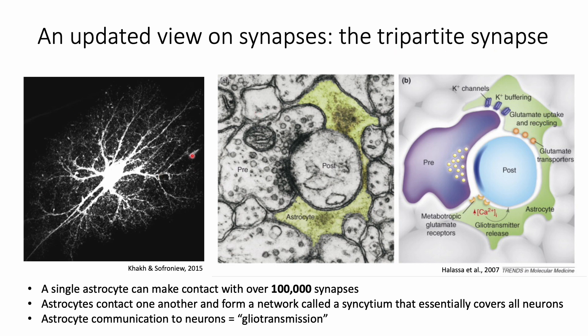Astrocytes have numerous branches as seen on the left panel, and each astrocyte can make contact with over 100,000 synapses. From this electron micrograph you can see that the astrocyte makes contact with both the pre- and postsynaptic terminal, and together this is referred to as the tripartite synapse.